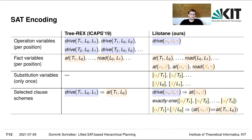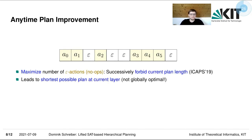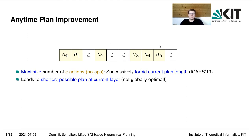Our approach also implements a kind of anytime plan improvement. Here we have an example where an initial plan is found at some layer with six actual actions A0 through A5 and four epsilon actions — no-ops introduced by construction of the algorithm. We can minimize the plan length by maximizing the number of epsilon actions which occur at the final layer, by successively forbidding the current plan length.